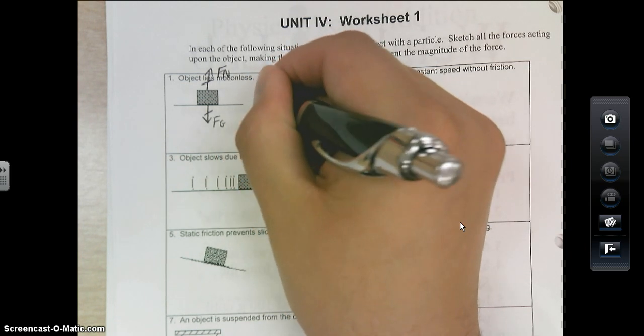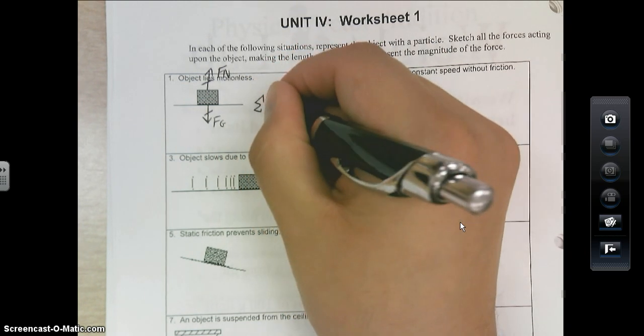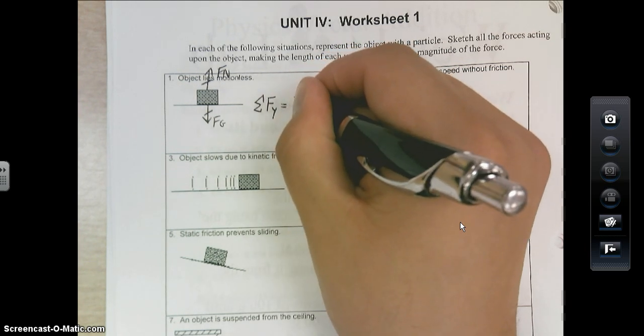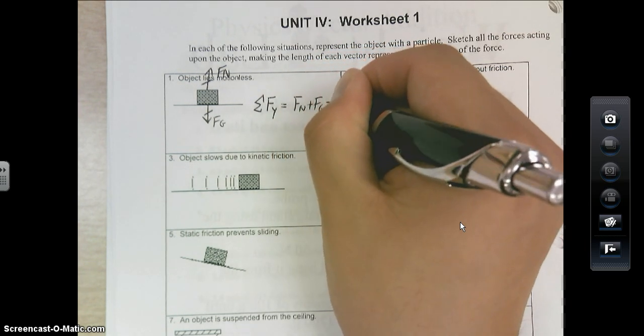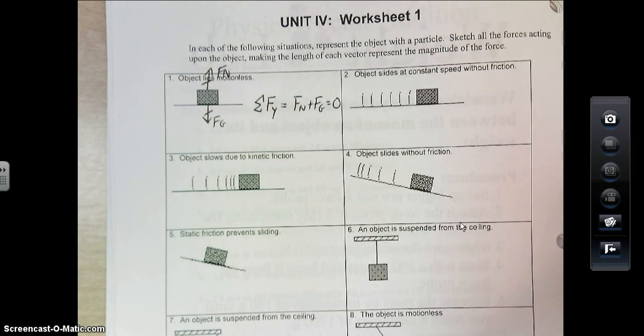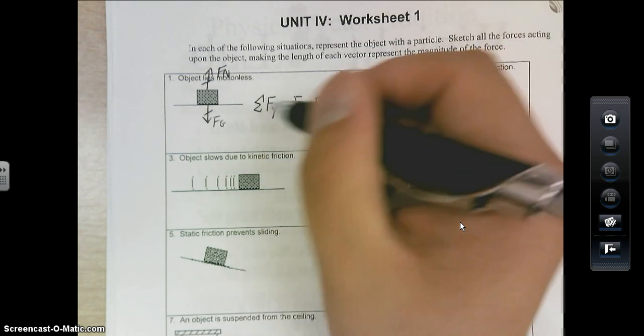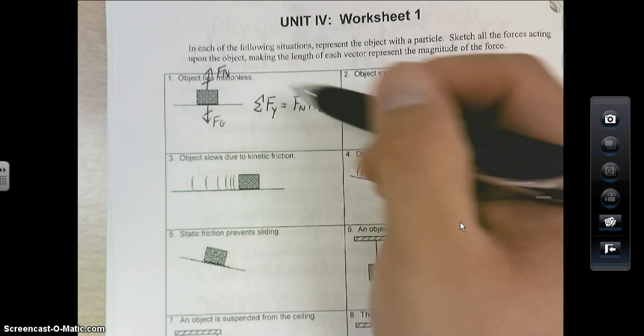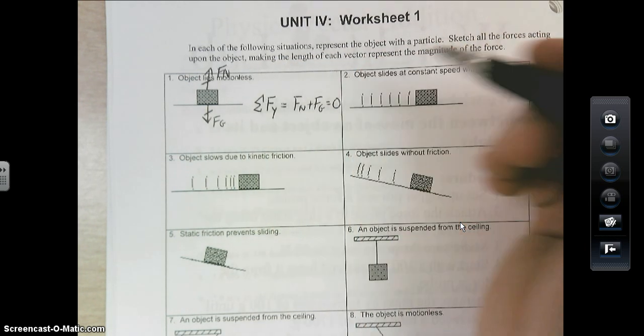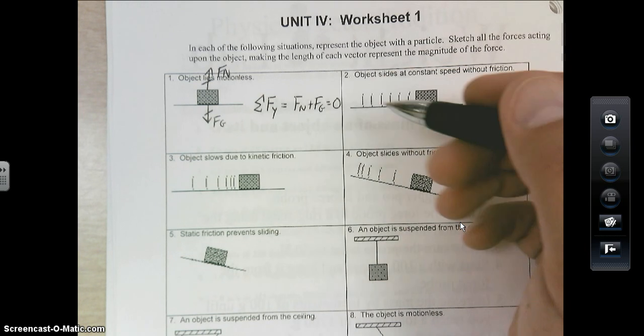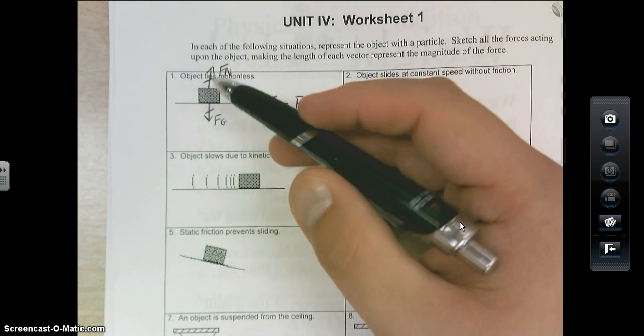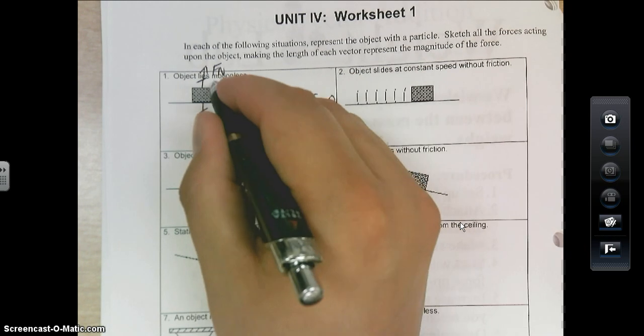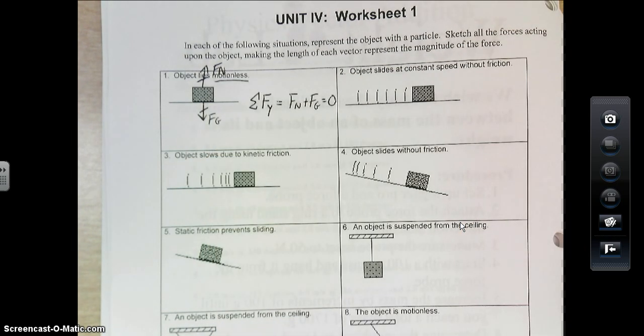which the sum of the forces in the Y would be equal to F of N plus F of G, and they would equal zero. And the reason of this is because gravity is acting down, therefore negative. Normal force is acting up, therefore positive. And if I add them together, I get zero. Now, this is something that, again, we're going to get into, but it is important to recognize that those two forces cancel each other, hence motionless. It's at equilibrium.